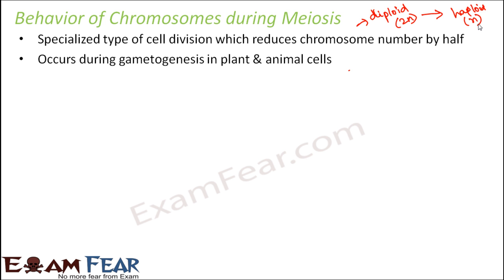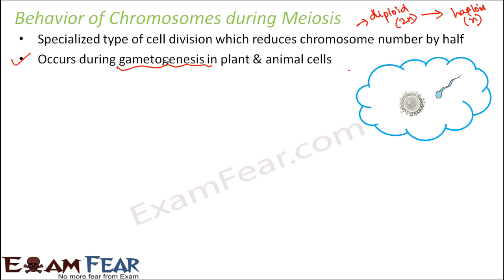Meiosis occurs during gametogenesis in plant and animal cells. In gametogenesis, gametes are being formed and gametes are haploid cells, so we need meiosis to form them. In human beings the gametes are the sperm and the ovum — they are haploid cells, so meiosis has to occur to produce them. Even in Mendel's experiments we saw how gamete formation occurs, so for gamete formation you need meiosis.